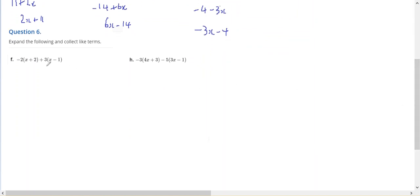Looking at question 6, I need to expand the brackets then collect like terms. Negative 2 times x gives negative 2x. Negative 2 times 2 is negative 4 plus 3 times x gives plus 3x and plus 3 times negative 1 gives negative 3. 3x minus 2x leaves 1x. Minus 4 minus 3 is minus 7.